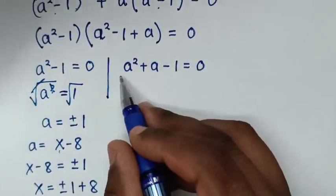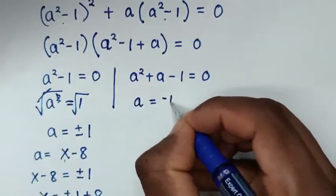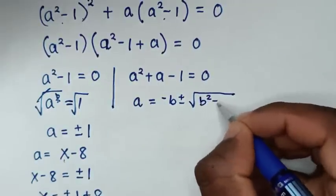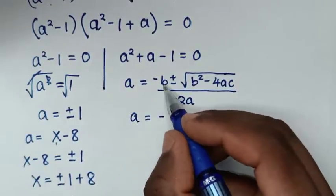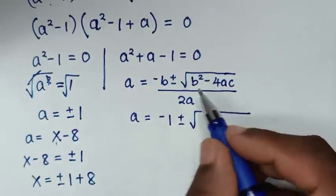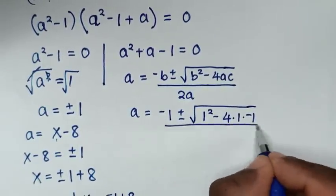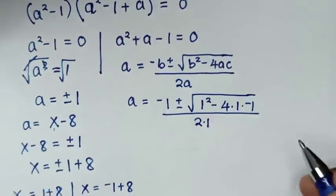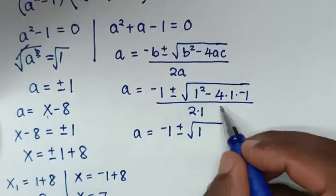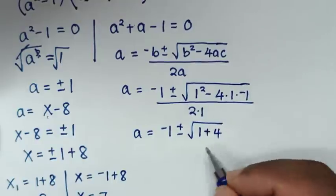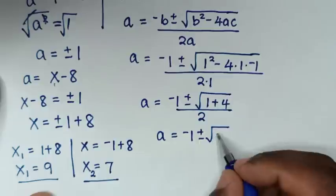The second solution is the quadratic equation a square plus a minus 1 equals 0. We solve this using the quadratic formula: a equals negative b plus or minus square root of b square minus 4ac, all over 2a. Here b is 1, so it is negative 1 plus or minus square root of 1 square minus 4 times 1 times negative 1, over 2 times 1. Then 4 times 1 times negative 1 gives plus 4.